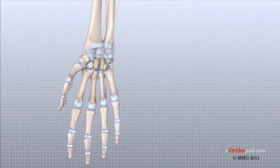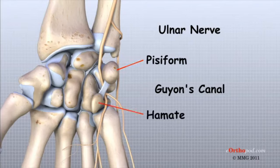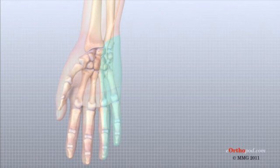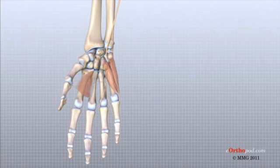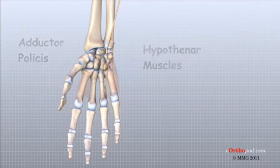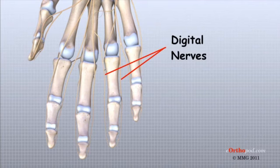The ulnar nerve travels through a separate tunnel called Guyon's Canal. This tunnel is formed by two carpal bones — the pisiform and hamate — and the ligament that connects them. After passing through the canal, the ulnar nerve branches out to supply feeling to the little finger and half the ring finger. Branches of this nerve also supply the small muscles in the palm and the muscle that pulls the thumb toward the palm. Each finger has a pair of sensory nerves, one on each side, that runs to the tip of the finger. These nerves are called the digital nerves and supply sensation to the fingers.